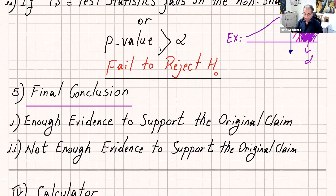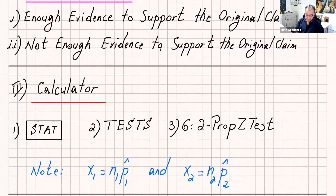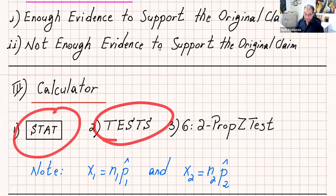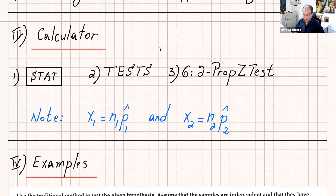Either you say there is enough evidence to support the original claim, or not enough evidence to support the original claim. If you want to use your calculator, go to STAT, then TEST, highlight TEST and go to number six which is 2-PropZTest. The calculator will ask you for x1, x2, n1, n2, and the type of test in H1, and it will give you the test statistic and the p-value right away. Know the formula but the calculator is much faster.